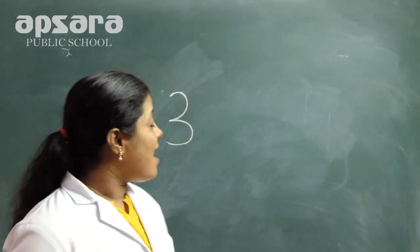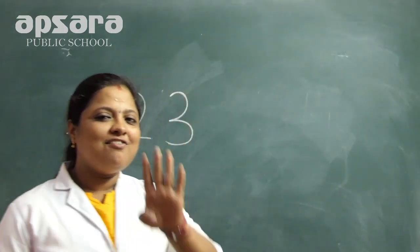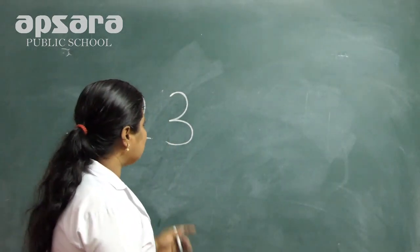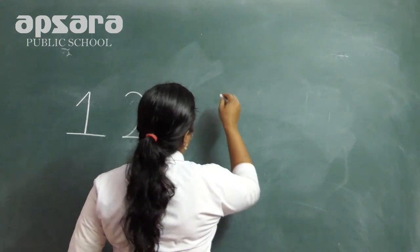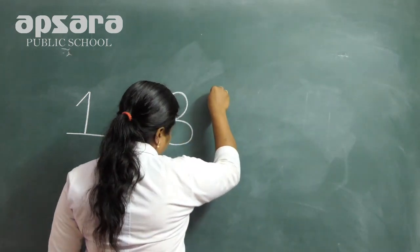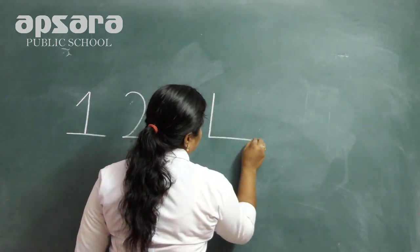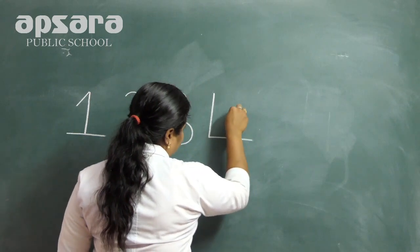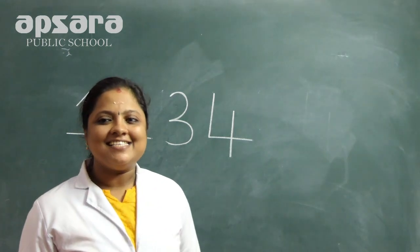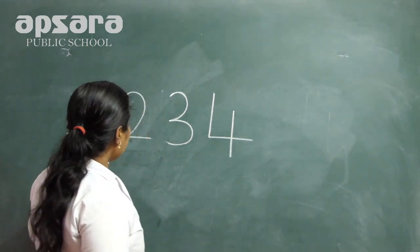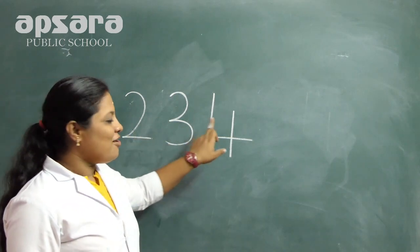Which number comes after three? Yes, good. Four. Teacher will show you how to write four. Standing line, sleeping line. Again, one standing line. See children, how many numbers are there? One, two, three, four.